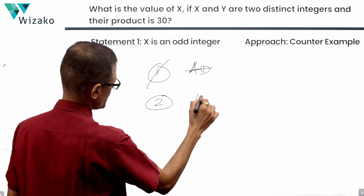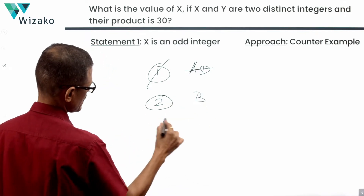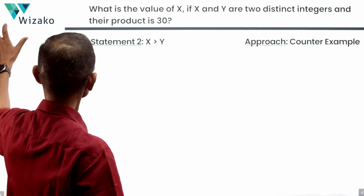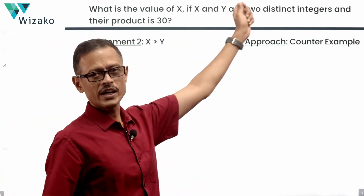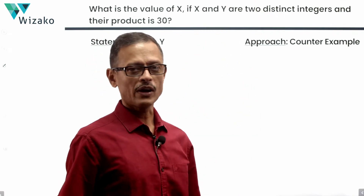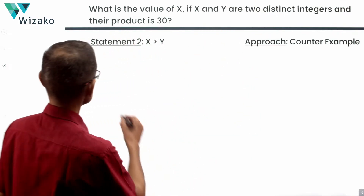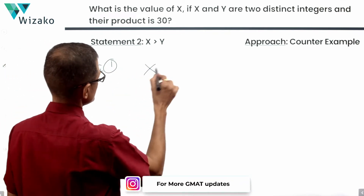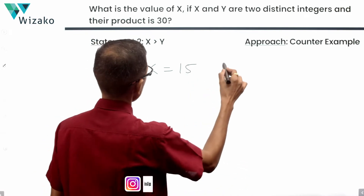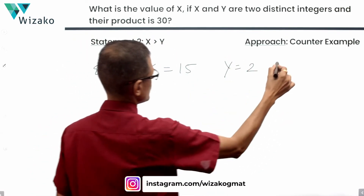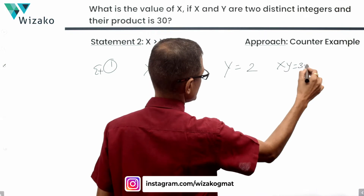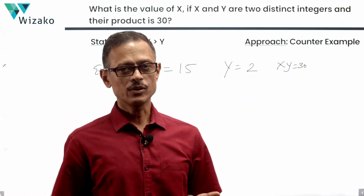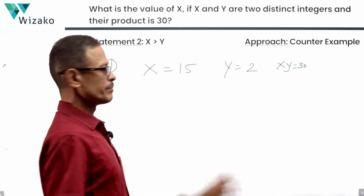If statement two alone is sufficient, we go with B; if not, we combine and determine C or E. Statement two says x > y. With x and y as two distinct integers whose product is 30, let's check for multiple answers. Example one: x = 15, y = 2, x·y = 30 — two distinct integers, product 30, and is x greater than y? Yes.